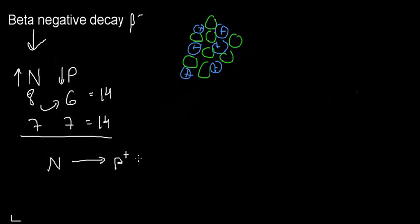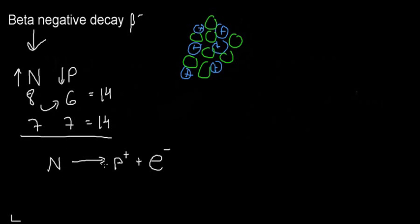We already know what a negative charge carrier can be — it can be an electron. Now we have both a positive and a negative charge, and they add up to neutral — perfect. Another particle is also associated with this event: an electron anti-neutrino.